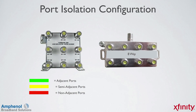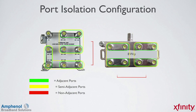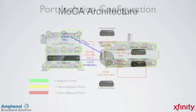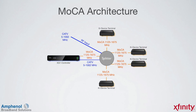Here I'm showing a couple styles of eight-way splitters. In order to put MOCA devices on the ports with the least amount of loss, you need to know which ports are adjacent, semi-adjacent, and non-adjacent, which isn't always clear and can be a challenge. So at Amphenol Broadband, we looked at MOCA challenges through existing splitters and looked at ways to improve the MOCA communications between all ports.